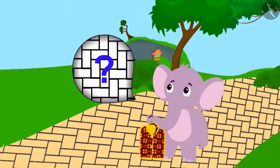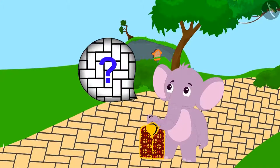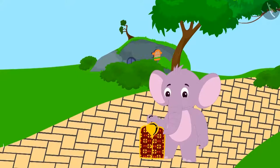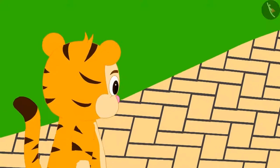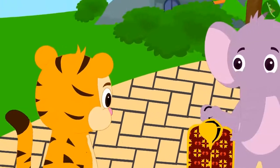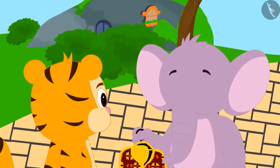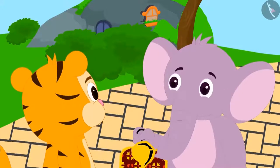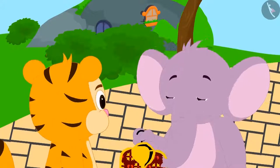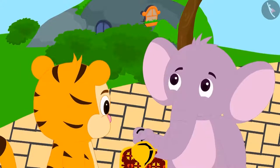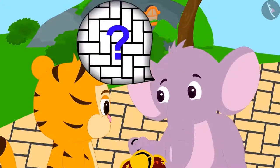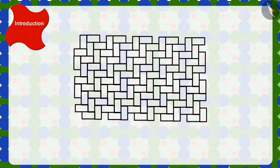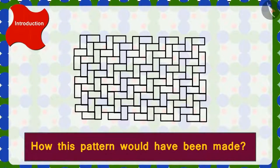Appu started thinking how this pattern would have been made. Just then, Shere Khan was passing by on his way to his house. Appu asked Shere Khan if he could tell him how this pattern would have been made. Children, can you tell how these patterns on the floor are made?